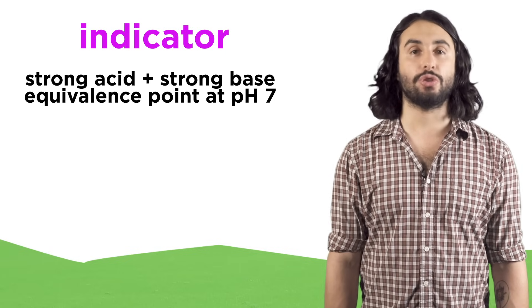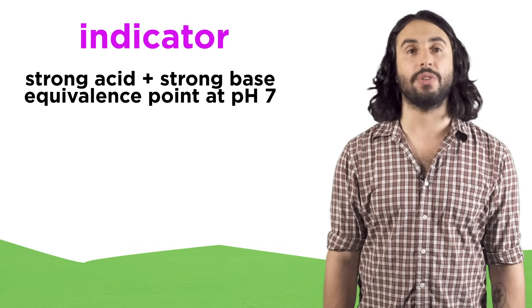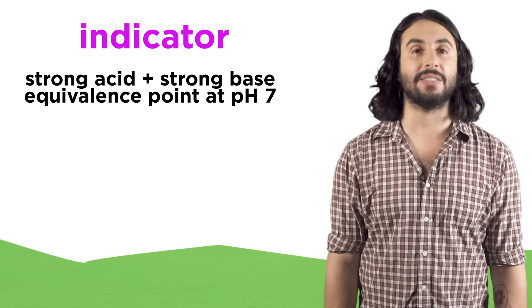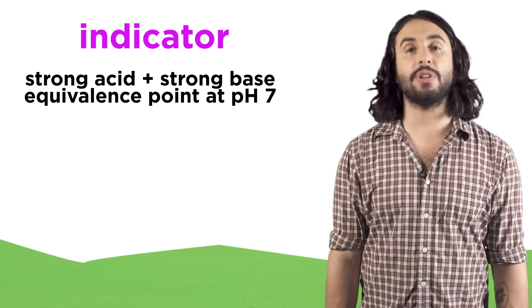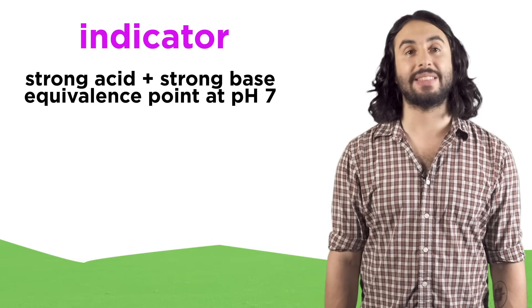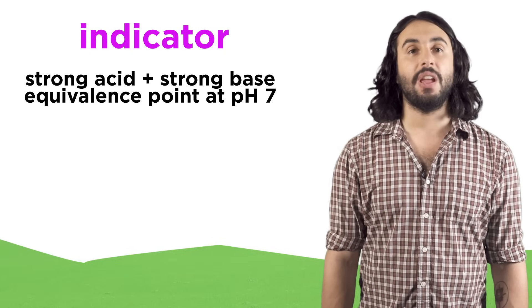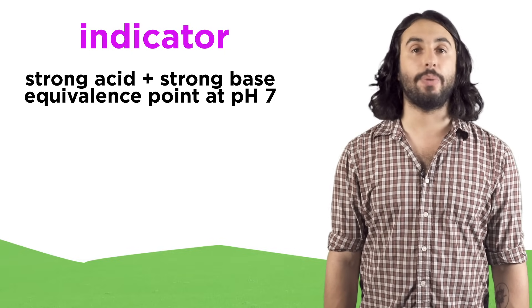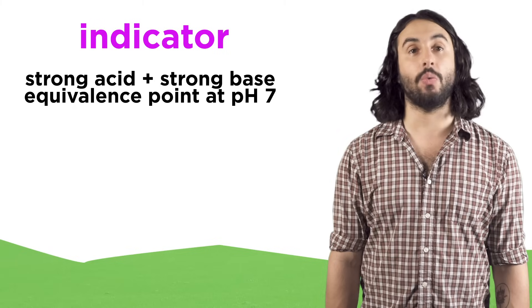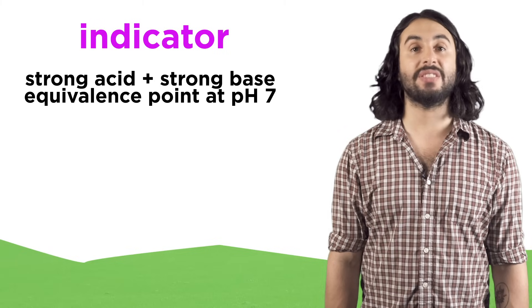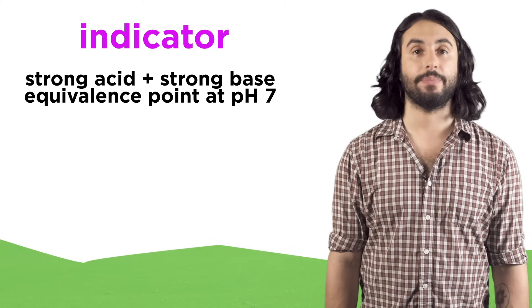When we neutralize a strong acid with a strong base, the equivalence point will be pH 7. If either or both species are weak, this number will vary.